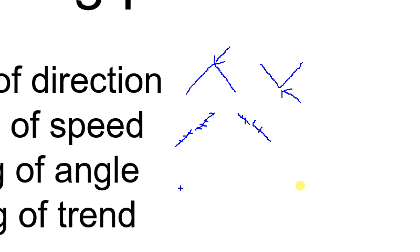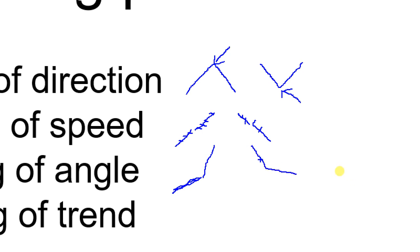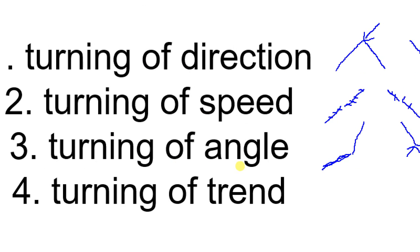Type 3 is turning of angle. Turning of angle means sometimes when we draw trend lines, you'll find that in the first period of uptrend the trend line angle is like this, but the second uptrend is like this — the angle is clearly different. That means the first is slow uptrend and the second is rapid uptrend. Also in a downtrend, sometimes the angle will be different: one is rapid downtrend, the other is slow downtrend. So this will be a turning of angle turning point.